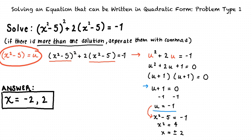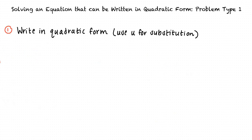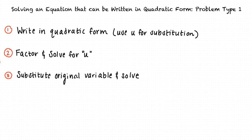So in conclusion, when solving an equation that can be written in quadratic form, we first transform the equation into quadratic form by substituting with u. Next, we factor the quadratic equation and solve for u. Then, we substitute our original variable back in for u and solve. Awesome job! You definitely know how to solve an equation that can be written in quadratic form.